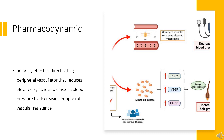Minoxidil is an orally effective, direct-acting peripheral vasodilator that reduces elevated systolic and diastolic blood pressure by decreasing peripheral vascular resistance. Minoxidil is also used topically to treat androgenetic alopecia. Microcirculatory blood flow is enhanced or maintained in all systemic vascular beds. In man, forearm and renal vascular resistance decline, forearm blood flow increases, while renal blood flow and glomerular filtration rate are preserved. The predominant site of minoxidil action is arterial. Venodilation does not occur with minoxidil; thus, postural hypotension is unusual with its administration.